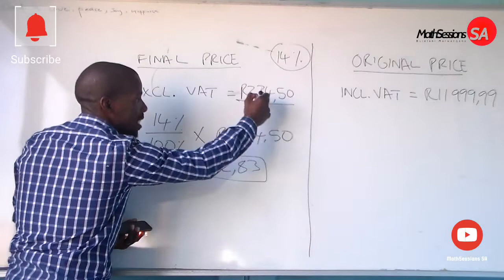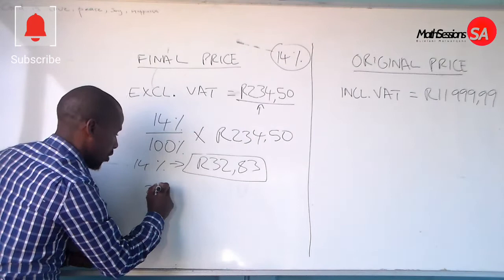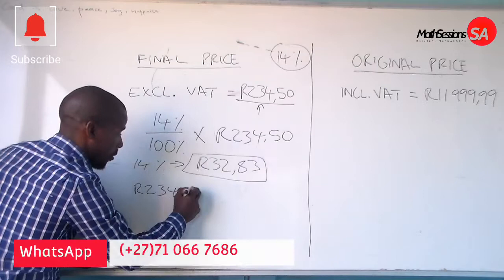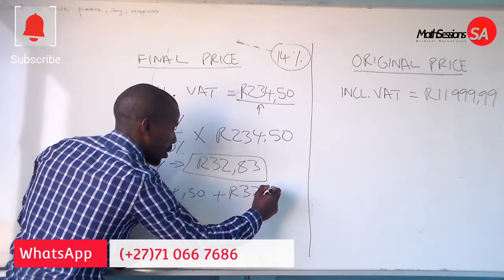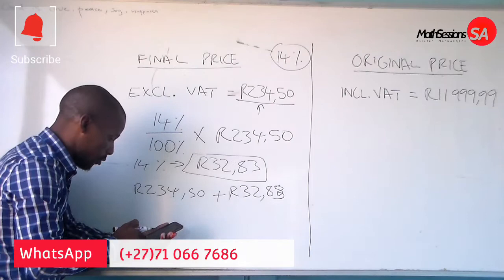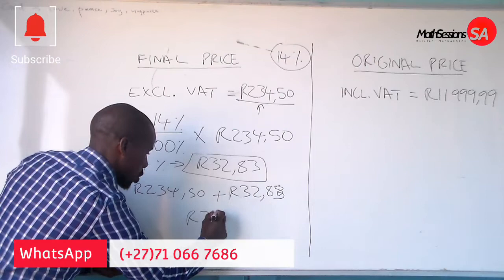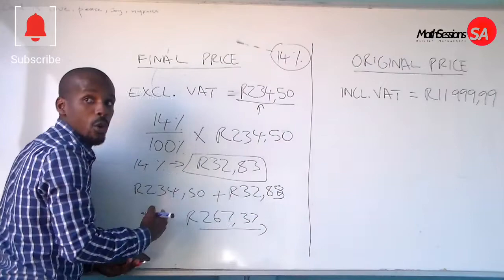So you take the 14% VAT amount and add it onto the original amount. The original amount R234.50 plus the VAT we just found, which is R32.83, gives us the total final amount of R267.33.